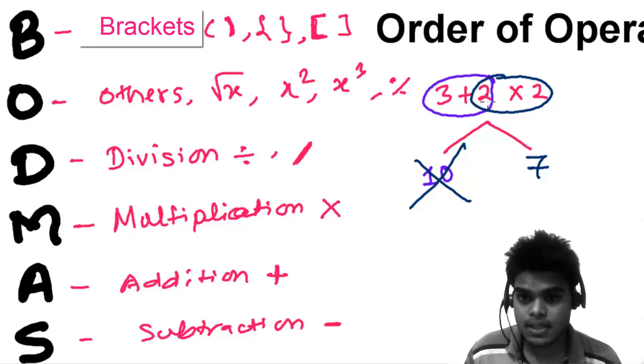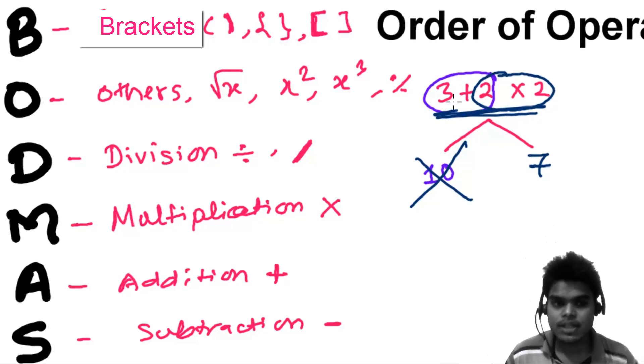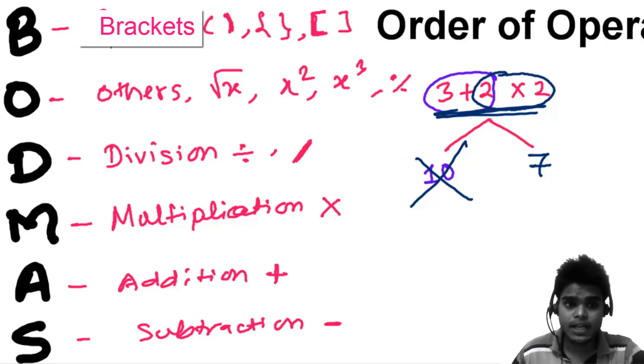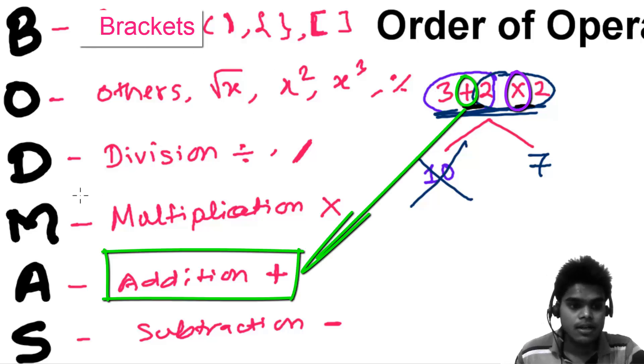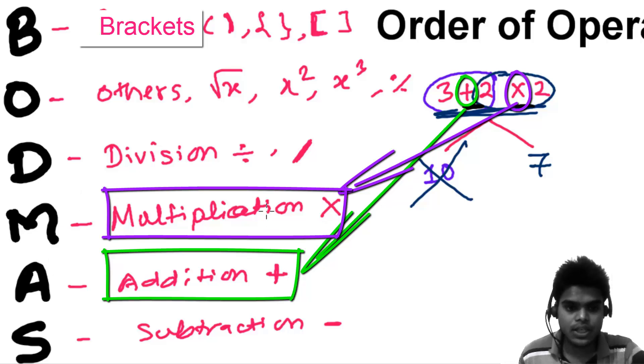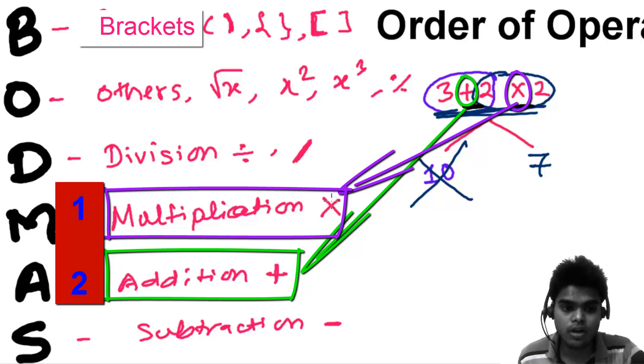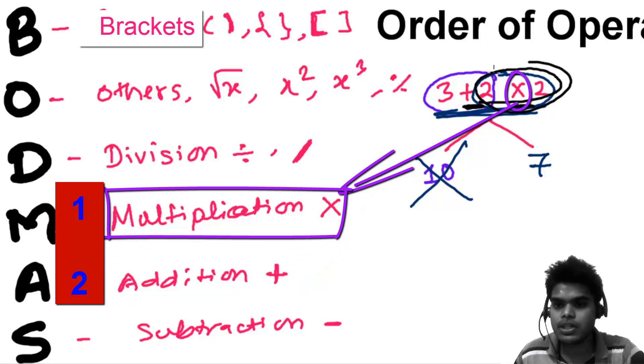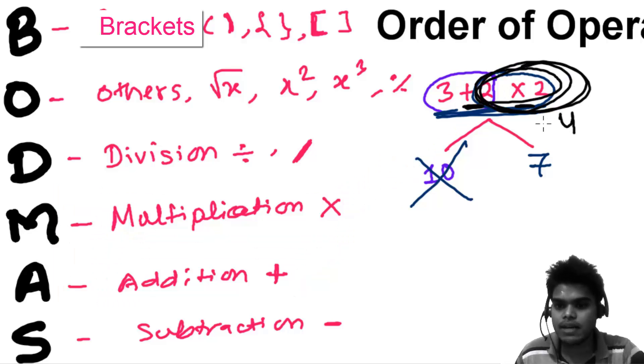Let's apply this BODMAS rule. Whatever this BODMAS mantra tells us is the correct answer. Do we have any brackets? No. We have addition and multiplication. Multiplication comes before addition, so 2 times 2 is 4, then plus 3 equals 7. That's correct.